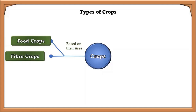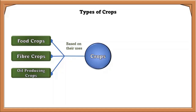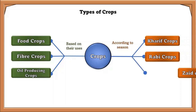Based on their uses, crops are divided into three main types: food crops, fiber crops, and oil-producing crops. Depending on the season, crops are divided into three types: Kharif, Rabi, and Zaid crops.